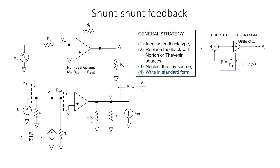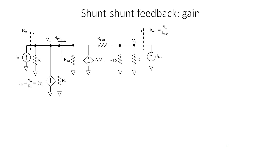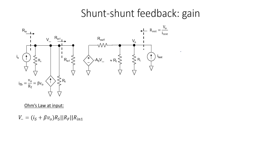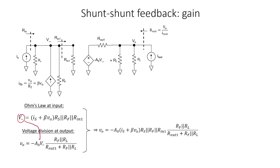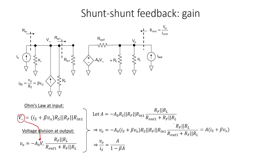Let's now go to step four and try to write it in standard form. Let's use Ohm's law at the input side: V equals IR. The voltage V minus equals the two currents times the three resistors in parallel. Let's apply voltage division at the output side. When we're trying to calculate the gain, we're going to set the test current equal to zero — we only use that test current when calculating output impedance. If I substitute the equation for V minus into the equation for the output voltage, I can eliminate V minus. Let's define A as all of these terms which are effectively constants in the circuit. I can then express the output voltage as A times IS plus beta V naught. This is the standard form of the gain for the shunt-shunt configuration.